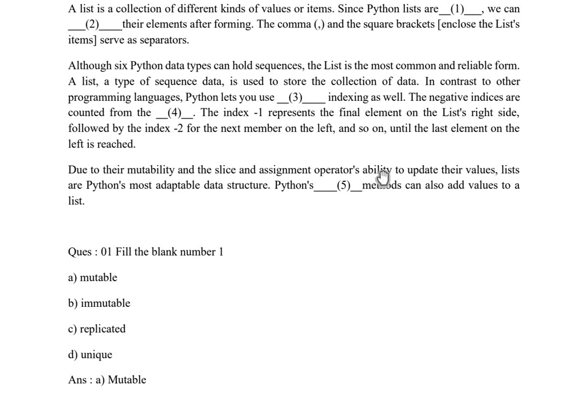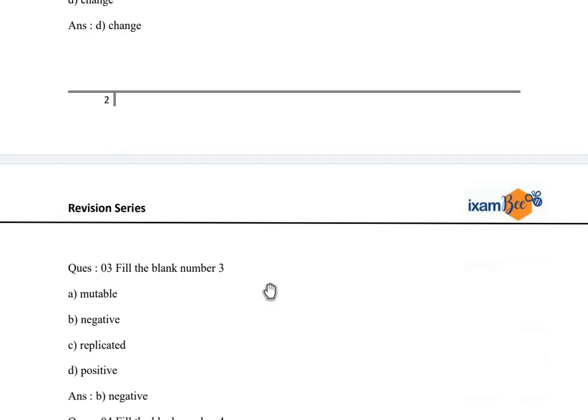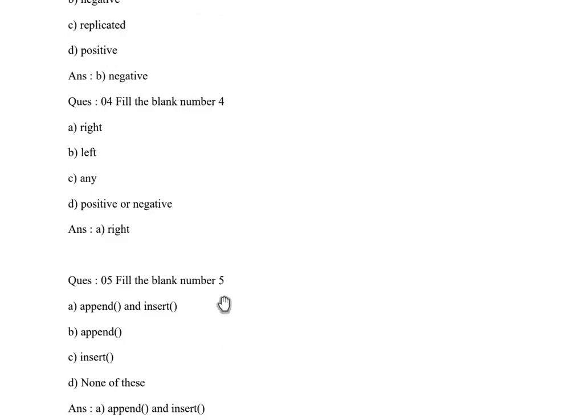Now let's quickly move to the last paragraph. Due to their mutability and the slice and assignment operator's ability to update their values, lists are Python's most adaptable data structure. Python dash method can also add values to the list. So this fifth one, what should be the correct answer? Let's go to the question.